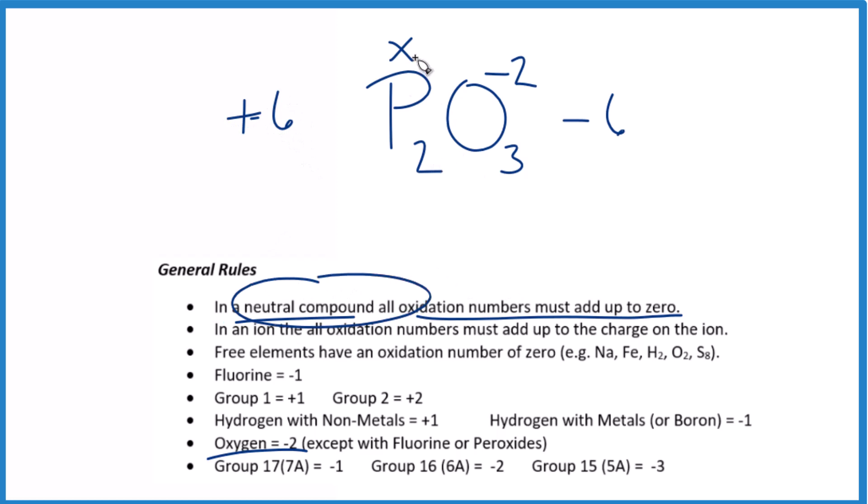So two times something gives us six. Two times a positive three, that would equal our positive six. So the oxidation number on each phosphorus atom is plus three.